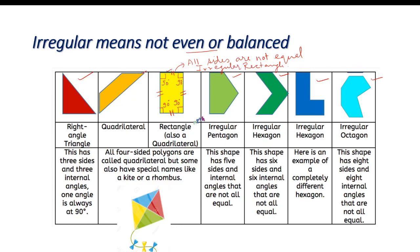In the case of a square, all sides are equal and all angles are equal, so a square is a regular polygon. But in the case of a rectangle, all angles are equal but sides are not equal, so it is an irregular polygon.